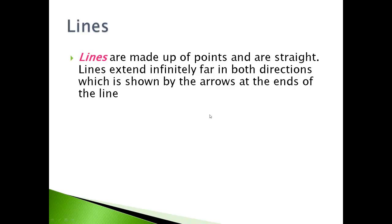Moving on to lines, lines are made up of points and are straight. Lines extend infinitely far in both directions, which is shown by the arrows at the end of the line. For example, arrow, arrow. That means that it goes on forever this way and this way. Notice that this has a lowercase m. It's lowercase so you know it's not a point. In these other lines, you've got three points on this line that are all capitalized, so you know those are points.